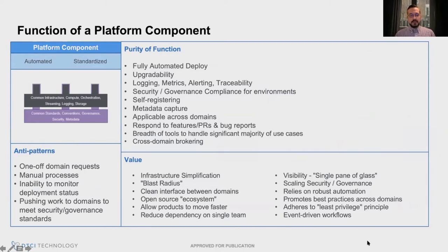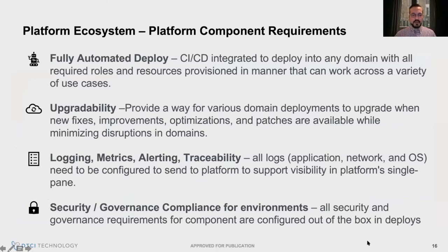We want to avoid manual processes. This kind of architecture is going to rely heavily on automation. We need to monitor automated deploys, understand what's deployed into which domains, and the core platform needs to provide upgrade paths. In addition to automation and upgradability, the core platform should think through logging, metrics, alerting, and traceability — getting those right as a single solution that works across all domains, so every domain doesn't have to invent that from scratch. Security, governance, and compliance are really important, and the core platform providing tools that handle those automatically is going to allow domains to go much faster.